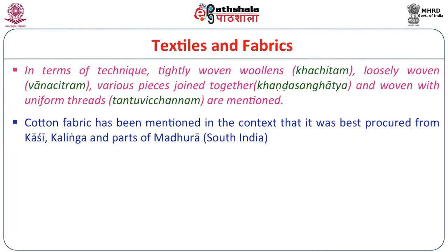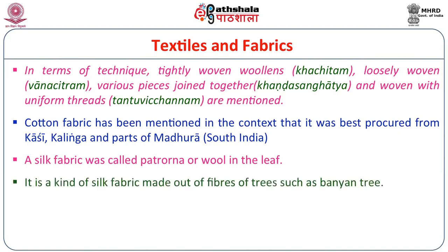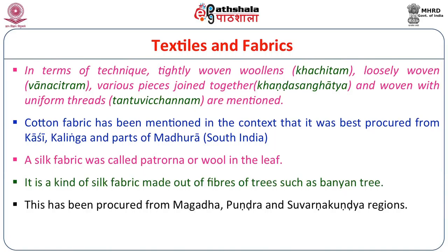Cotton fabric was best procured from Kasi or Varanasi — Varanasi is now famous for Banarasi silk saris, but cotton is also very famous. Kalinga in present Odisha and parts of Madhura in South India were also sources. A silk fabric called Patrona, a kind of silk fabric made out of fibres of trees such as the Banyan tree, was procured from Magadha, Punra and Suvarna Kundia regions. Silks from China are described as Kaushiya or Chinnapatta.